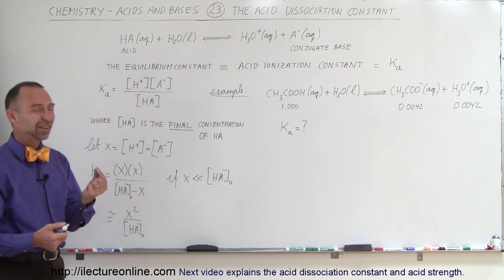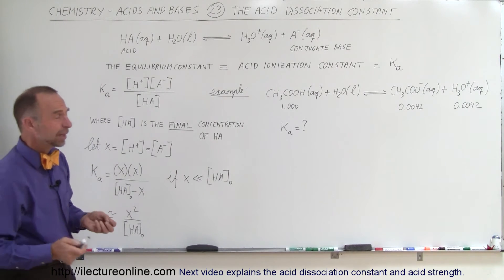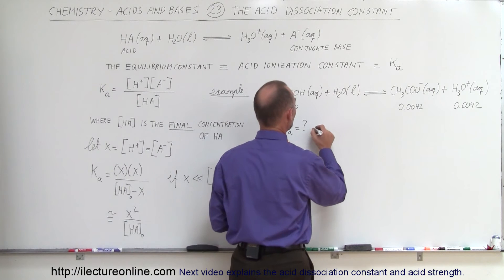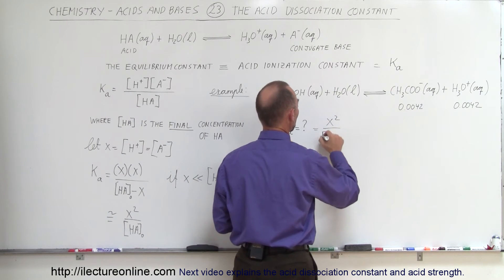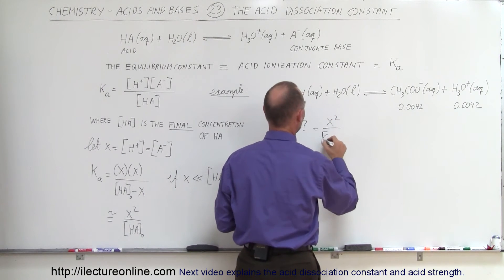So in our example, since X is very, very small, I think we can get away with it. So we can say that in this case, this is going to be X squared divided by the original concentration of your acid.